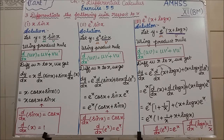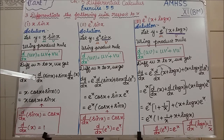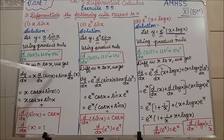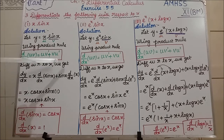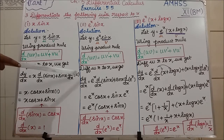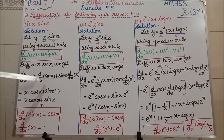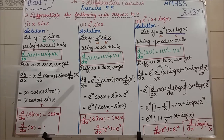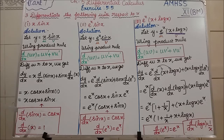dy/dx equals, according to the formula, u — which is x — keep as such. v' means differentiate v, so d/dx of sin(x). In the middle of the formula we have plus, so plus sin(x) — that is v kept as such. Then u' means differentiate u: d/dx of x. Next step: x · d/dx of sin(x) = x · cos(x). Plus sin(x) · d/dx of x = sin(x) · 1. So the answer for the first subdivision is x·cos(x) + sin(x).